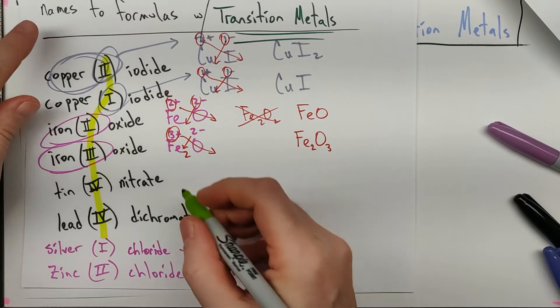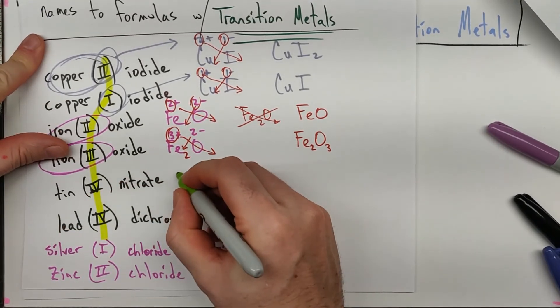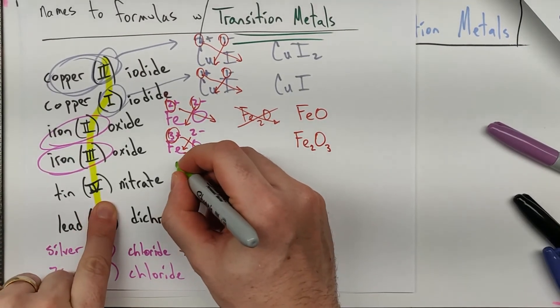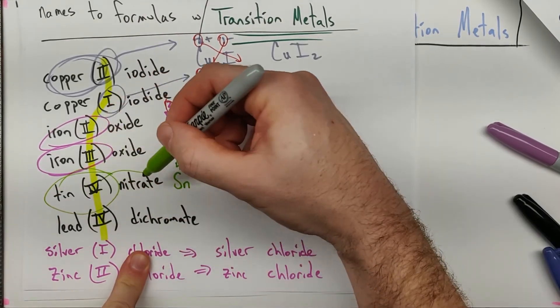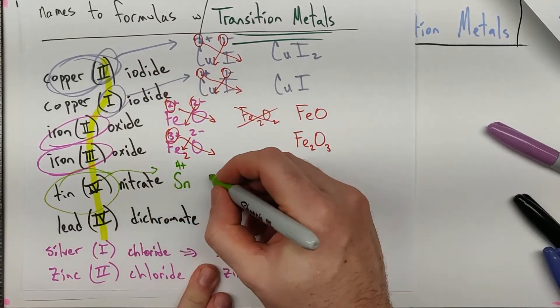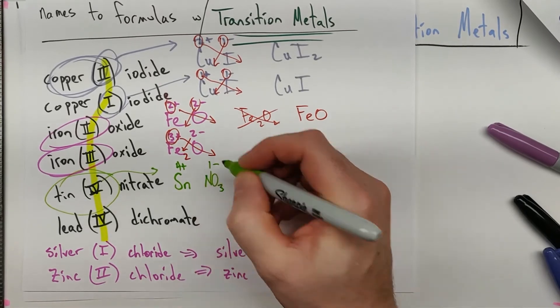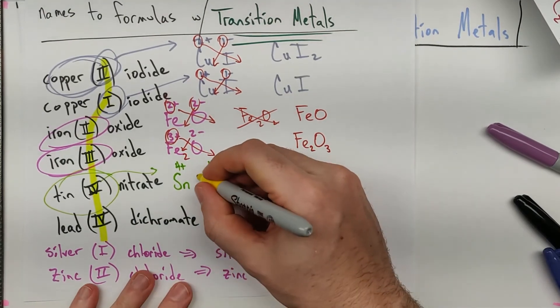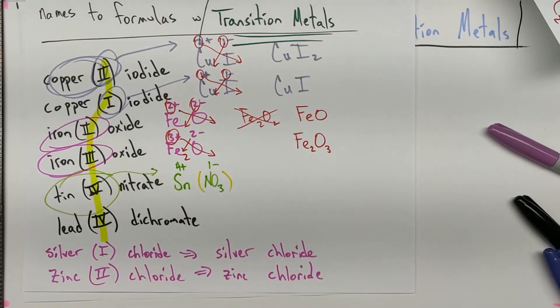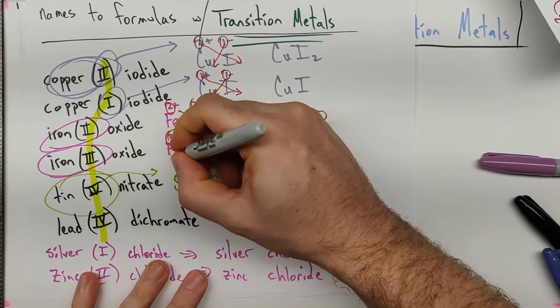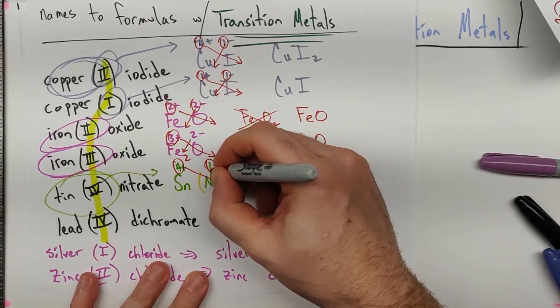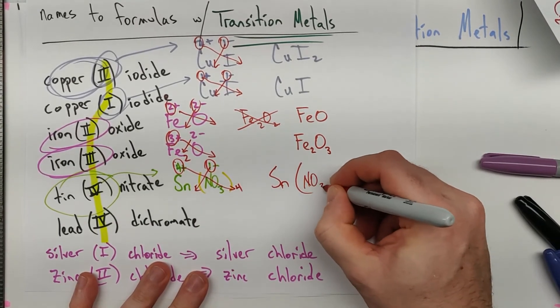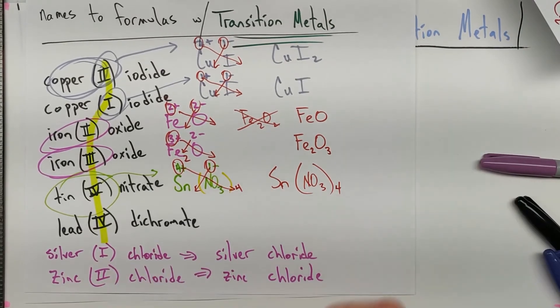Tin nitrate, same deal. Tin, atomic number 50, chemical symbol Sn from Stannis. It is a 4-plus here. So take note, that information is there. Nitrate, NO3-. We do have to spot those polyatomic ions like we did before. When we crisscross and reduce, the 4 is going to go out there, and the 1 is going to go down there. So you end up with Sn, we need our parentheses, (NO3)4. Four nitrates in that compound.